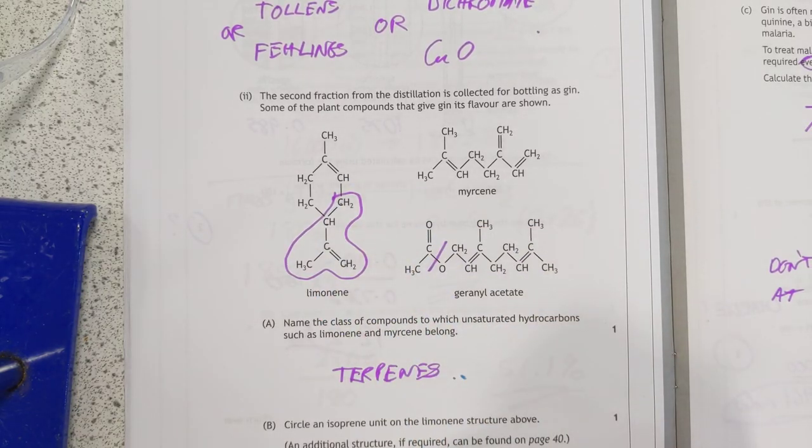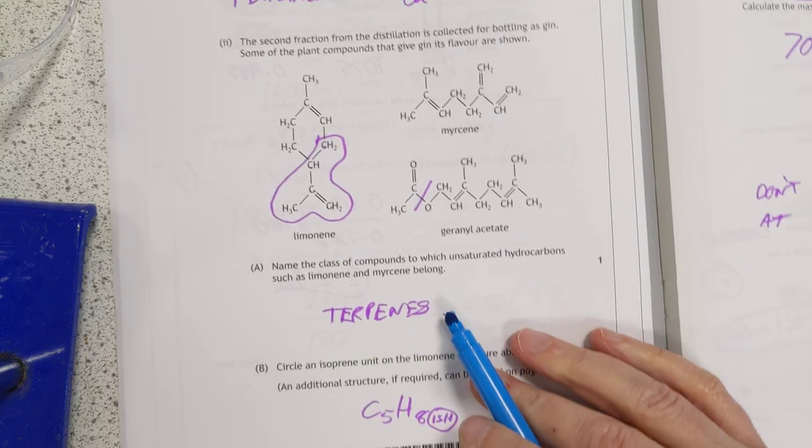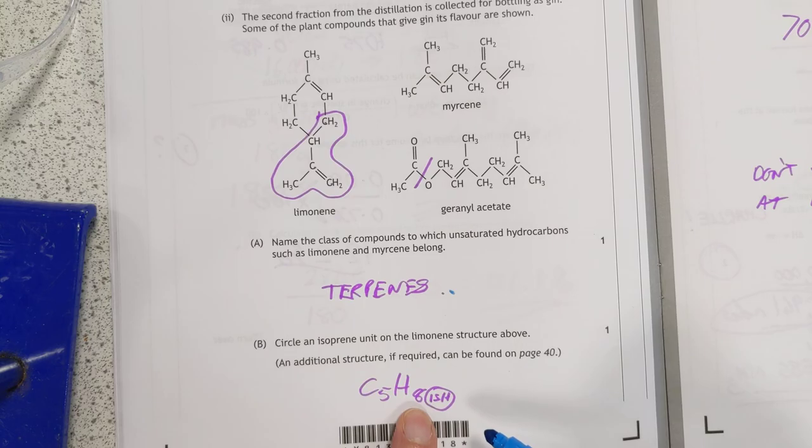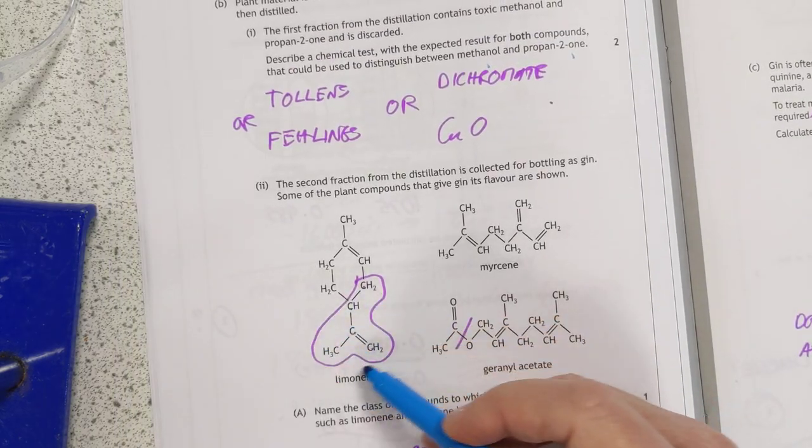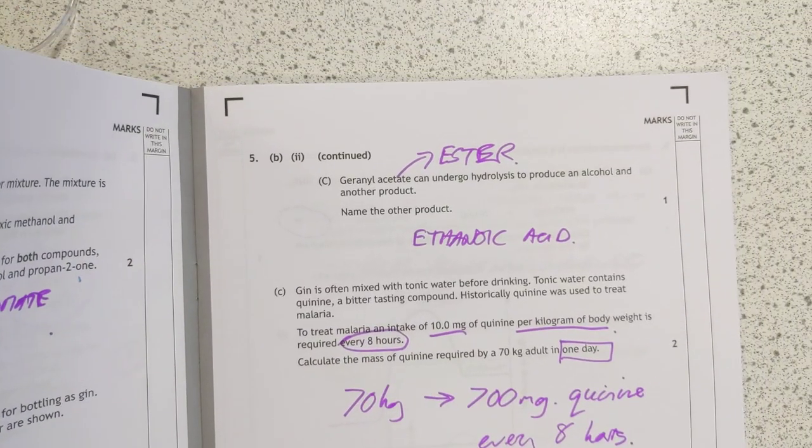These are terpenes. Alternating double and single bond things. These are terpenes, there are units of isoprene. And you're looking for C5H8-ish here, and that corresponds to that. There may be another one, but it was too late at night and I thought I'll just stop there.